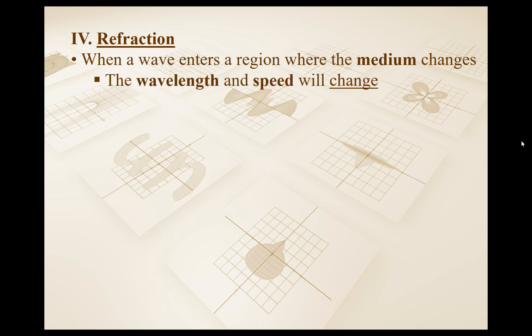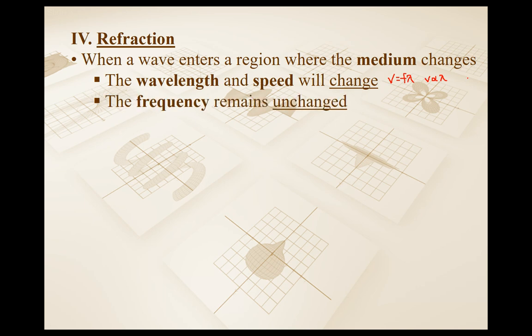When you move into a different medium, both the wavelength and the speed will change depending on whether you're going into a faster or slower medium. According to the universal wave equation, v equals f times lambda, there's a direct relationship between v and lambda — if v goes up, lambda goes up. However, this is only true if the frequency is unchanged. Frequency is constant when going from one medium to another; the only thing that can change frequency is the source.